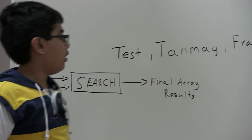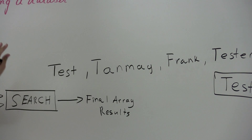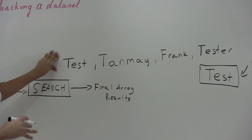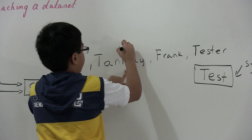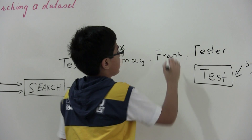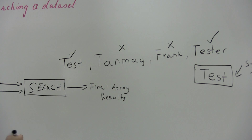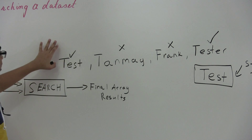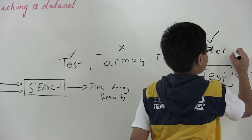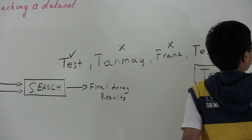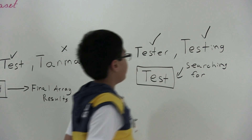Inside the search function, we first go through each item. Does 'test' contain the word 'test'? Yes — it's a successful candidate. Does 'ten' or 'me' contain 'test'? No. Does 'Frank' contain 'test'? No. Does 'tester' contain 'test'? Yes. And if we also add 'testing', that would also be a candidate because it has the word 'test' in it.